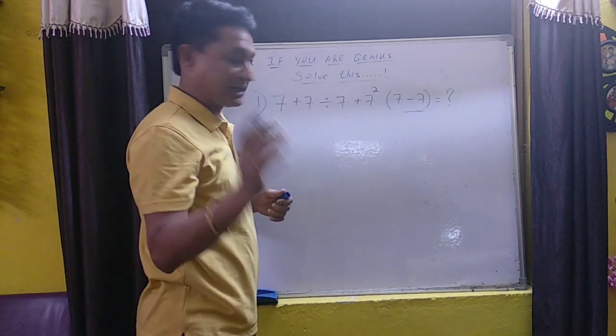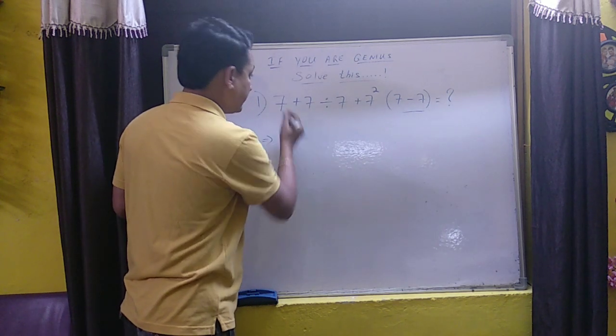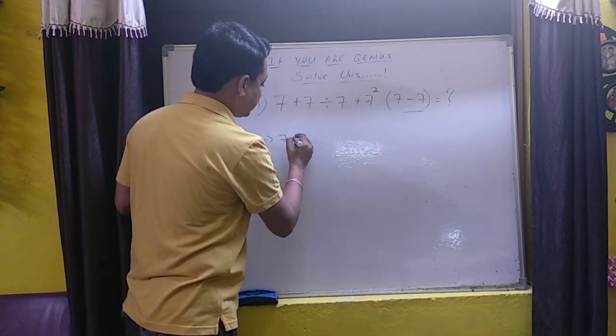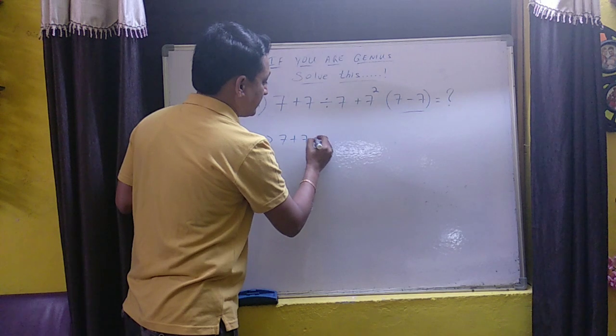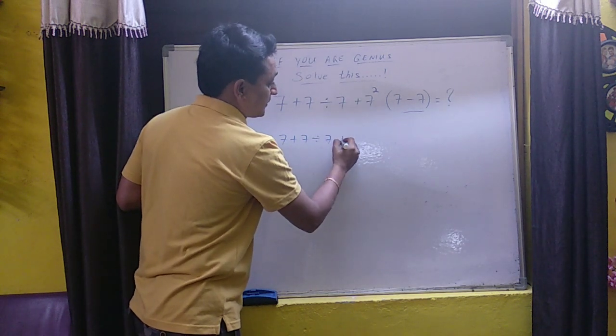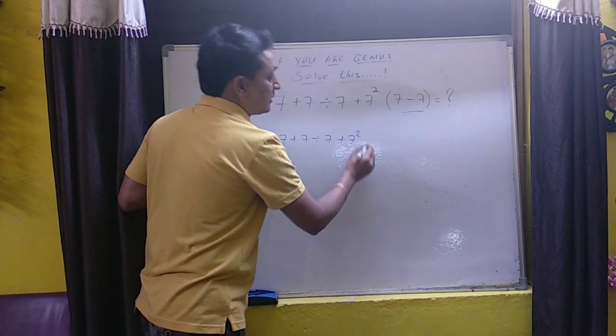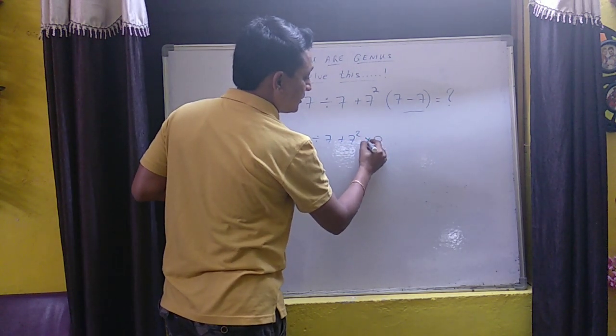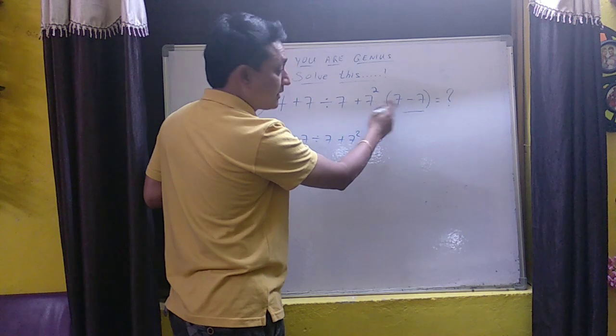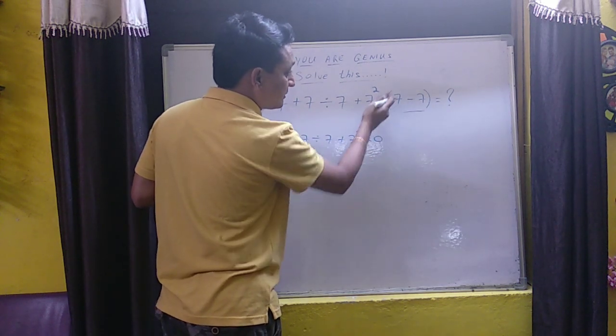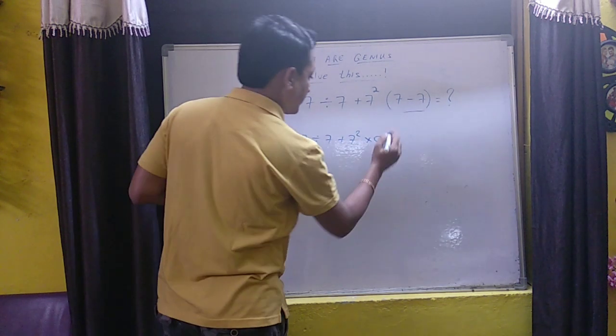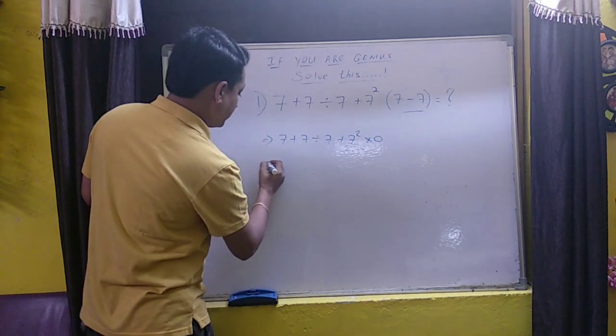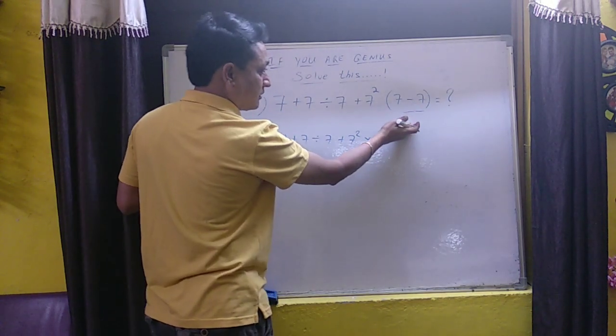So we are going to solve for brackets first. So we take all other things as it is. 7 plus 7 divided by 7 plus 7 square. Now 7 minus 7 is 0. Because this is a bracket, when you open it, this implies that it is multiplication. So first rule is over.